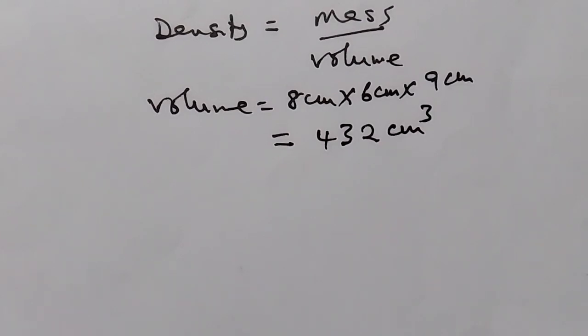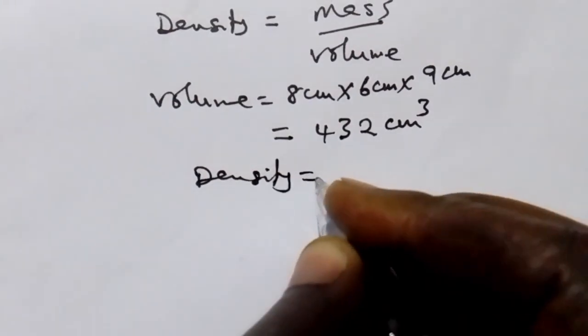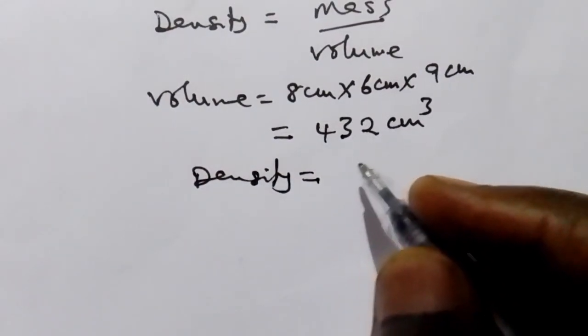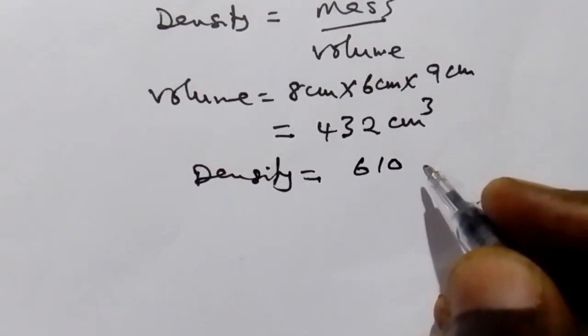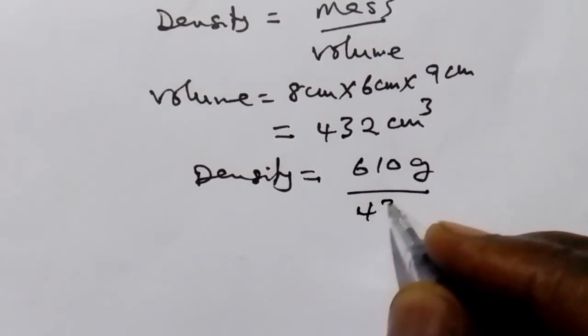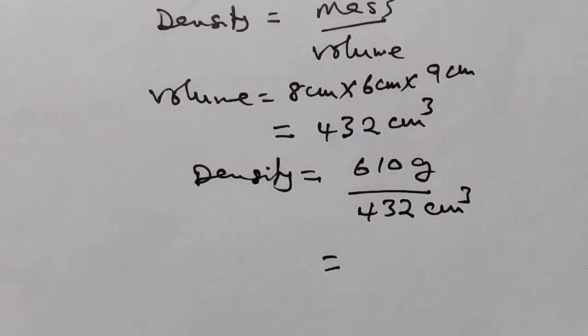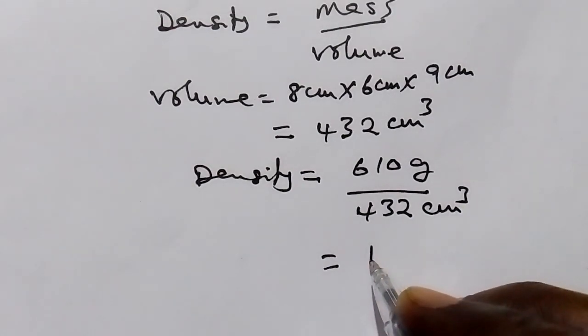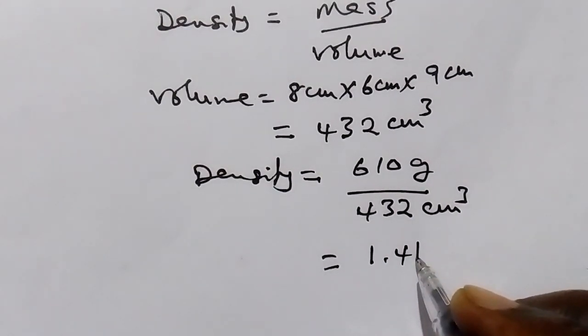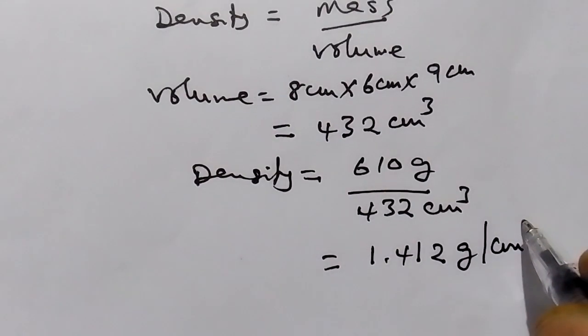Our mass we have been given to be 610 grams. So we can say that density is equal to the given mass, 610 grams, over volume, 432 cm cubed. So when you calculate that one using a calculator, we are going to find 1.412 grams per cubic centimeter.